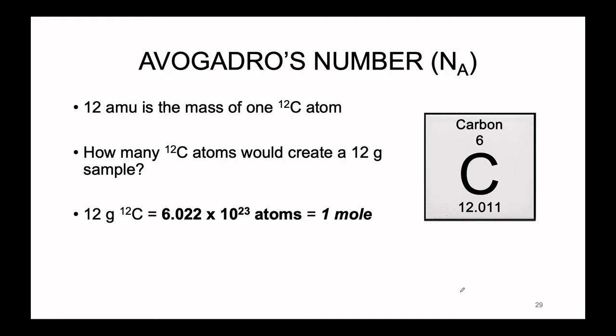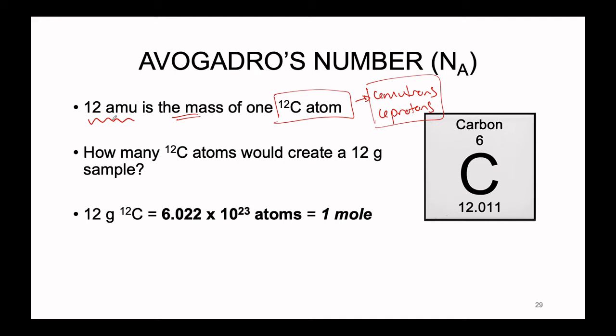So how did we come up with this number? How did we find the mole? Well, 12 atomic mass units was, back in the day, arbitrarily decided to be the standard mass for one carbon-12 atom. So if we have a carbon atom that contains six neutrons and six protons, this is the standardized element on the periodic table. All other masses are relative to this. One carbon-12 atom weighs exactly 12 AMUs.